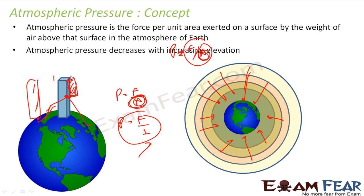If you take one square meter cross-sectional area at point A near the surface and point B at a higher altitude, at point A the mass of the air above it is more. That is why if you go up a mountain, the pressure decreases — because the air above you is less, it exerts less force, hence less pressure.